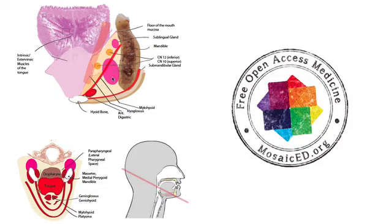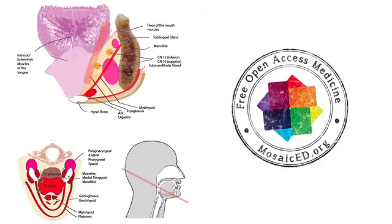The only other important relation of the submandibular space is that posteriorly it communicates with the parapharyngeal space, also called the lateral parapharyngeal space. Here you can see a section sloping down anteriorly, showing the parapharyngeal space next to the oropharynx communicating with the submandibular space at about the anterior border of the mandible. This means infections of the parapharyngeal space are able to track into the submandibular space.